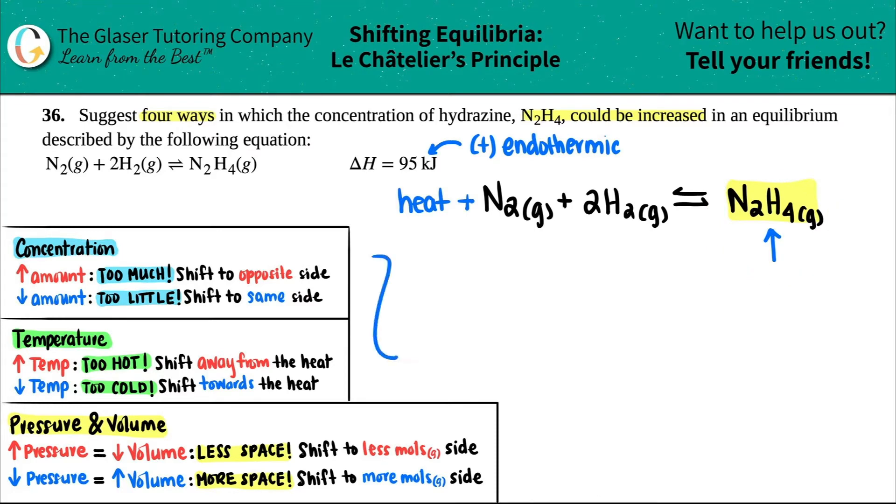We're going to run through all of our Le Chatelier principle information and just come up with ideas in which we can increase this. Now before we do that, let's just figure out which reaction we need to go. Are we doing the forward reaction or are we doing the reverse reaction? Keep in mind that you want to produce this. So you always go to that side. So we want to shift to the right or proceed in the forward direction.